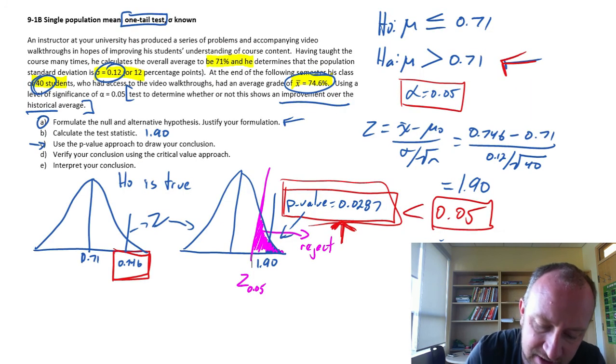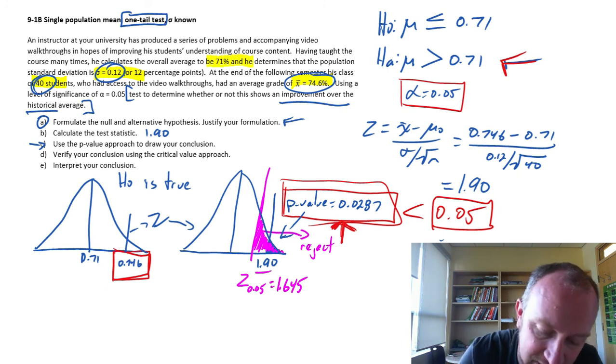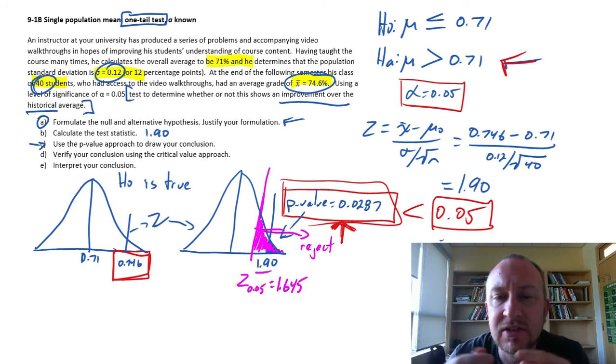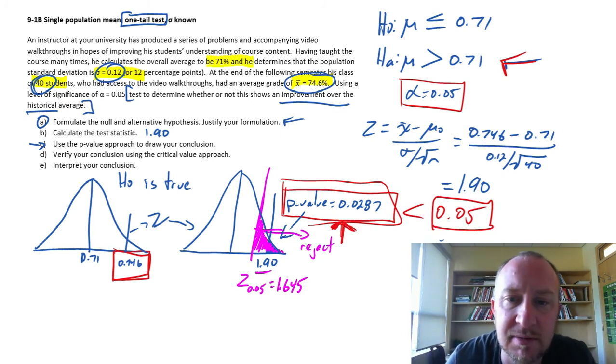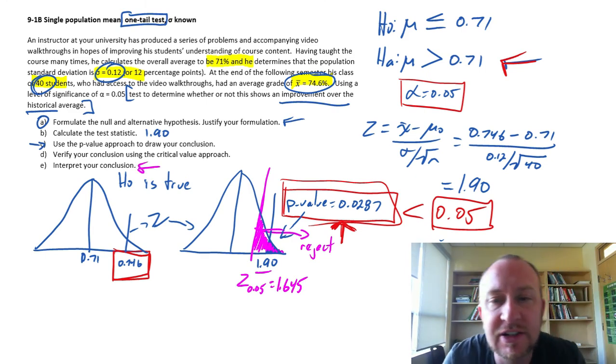If I come back here, this critical value is 1.645. My test statistic is beyond that. It's further out into the tail than that. So, again, this gives me sufficient evidence to reject my null hypothesis. So, our conclusion, or our interpretation, I should say.